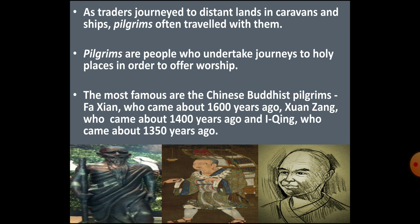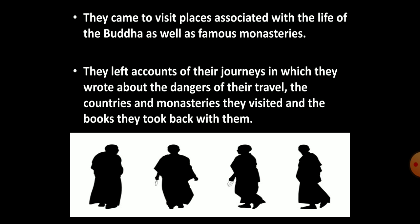When we are talking about Buddhism, it is also important to mention some pilgrims. Pilgrims are men and women who travel to holy places as devotees to offer worship. Many times pilgrims also travelled with those traders. The most famous pilgrims who came to India were the Chinese Buddhist pilgrims: Fahyan, who came to the subcontinent around 1600 years ago; Xuanzang (Wen Zhang), who came around 1400 years ago; and Yi Jing, who came around 15 years after Xuanzang. These Chinese pilgrims came as they wanted to visit places associated with the life of Buddha. They also wished to visit famous monasteries.